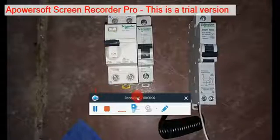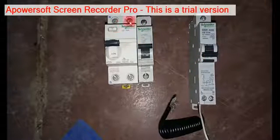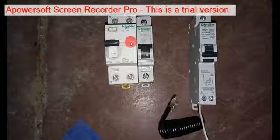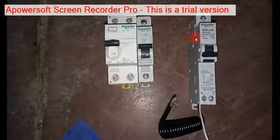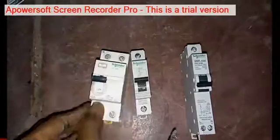See here, this one is RCBO, this one is MCB, and this is RCB. These two combinations make the RCBO, which means overcurrent protection and residual current protection.